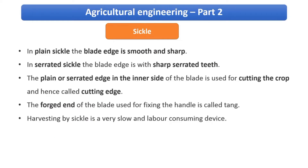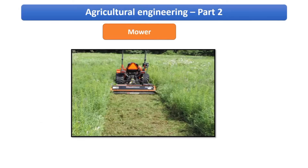In a plain sickle the blade is smooth, while in a serrated sickle there are sharp serrated teeth present. Moving to the mower — looking at the picture, you can see it moving on the surface through herbaceous crops like grass, leaving behind the harvested material — the swathe — right there.